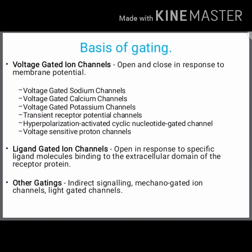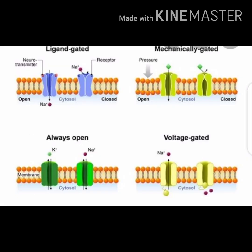Ligand-gated ion channels open in response to specific ligand molecules binding to the extracellular domain of the receptor protein. Other gating types include mechano-gated ion channels and light-gated ion channels. As you can see in the picture, the first type is ligand-gated — neurotransmitters shown as red balls bind to the receptor, which opens the channel allowing extracellular sodium to move intracellularly through pore-like structures.